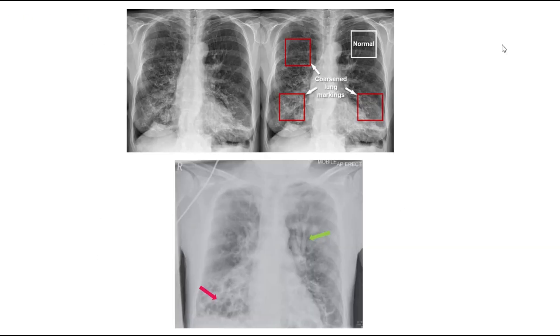Here you can see the findings in a chest X-ray of a bronchiectasis patient. You can see the difference between the normal side of the lung and the side with coarsened markings.